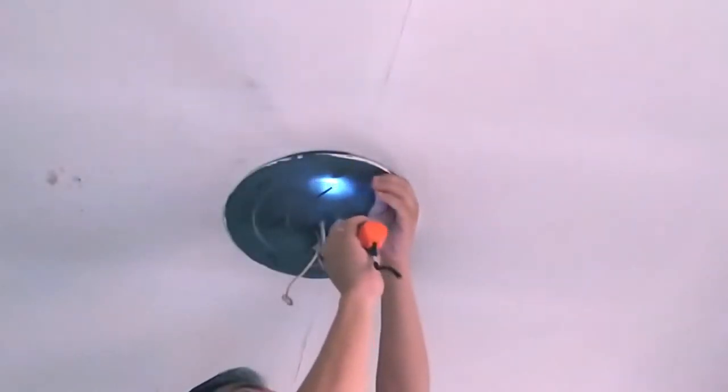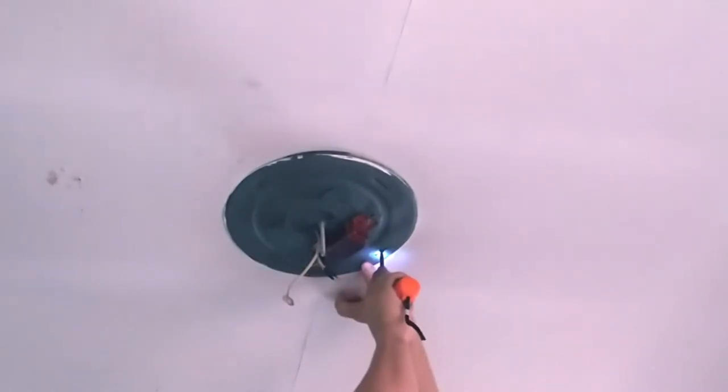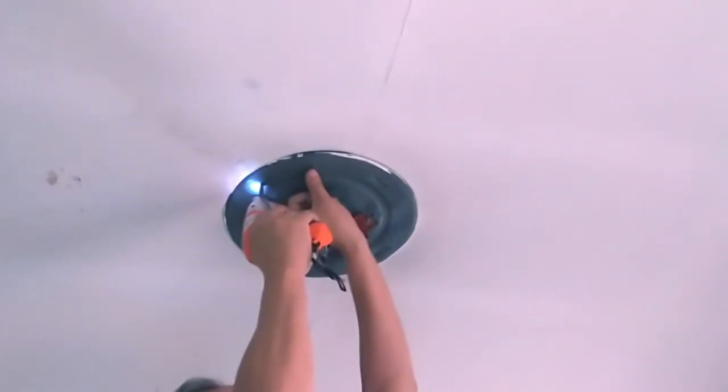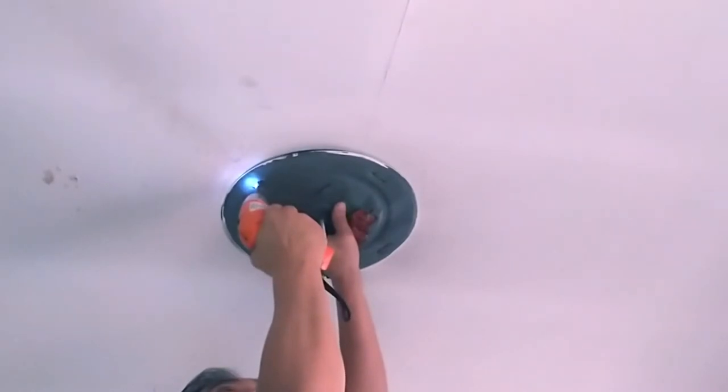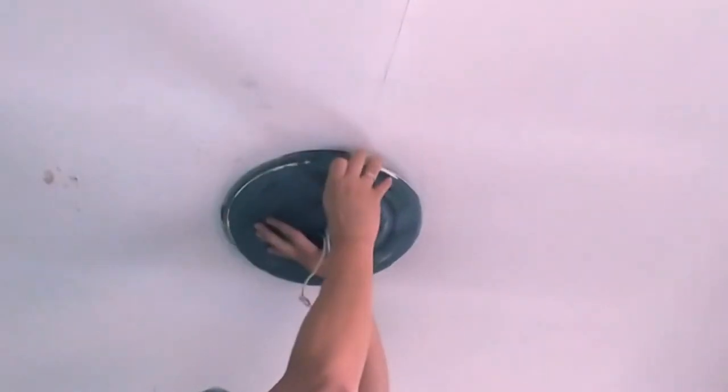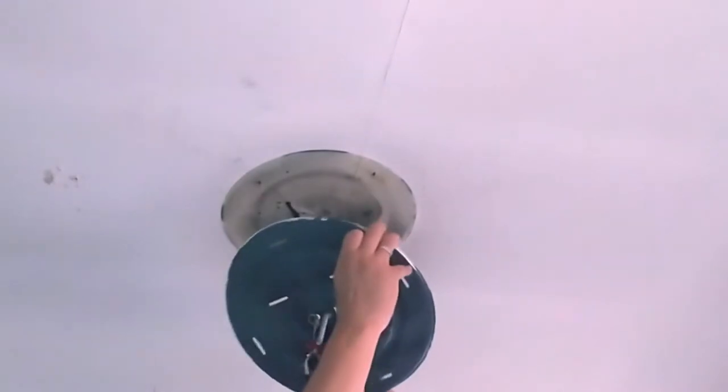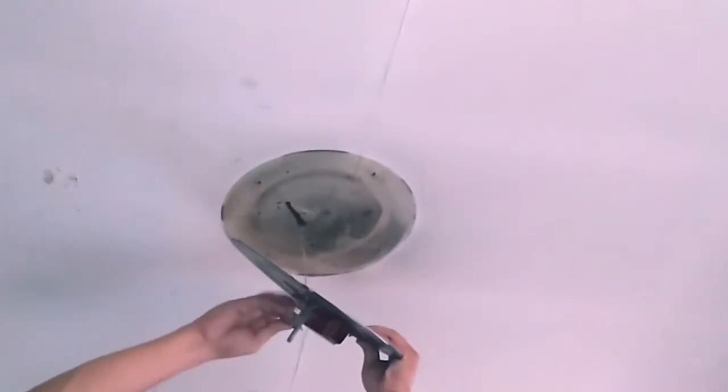The mounting plate is attached to the ceiling with three to four wood screws. Let's remove them one at a time. Remember to support the plate with one hand unless you want it to drop on your head. Pull out the wiring from the center hole and get rid of the old fixture.